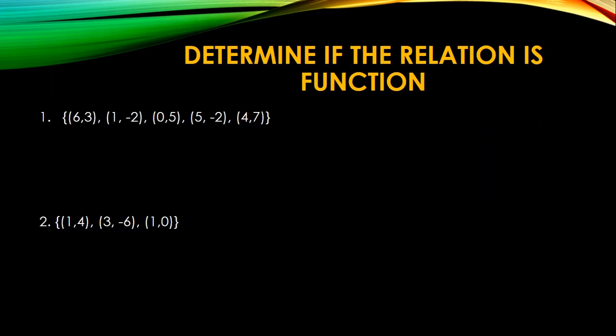Now let us determine if the relation is a function. So number one, we have here the set {(6, 3), (1, -2), (0, 5), (5, -2), (4, 7)}. So let's look at the first elements here. So does it repeat? No. So therefore, this is a function. And then the second one, let's look, so 1 repeats, no? So this is not a function because it does not satisfy its properties.